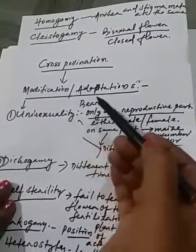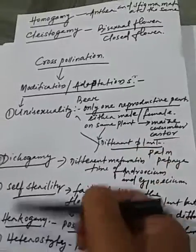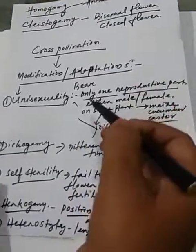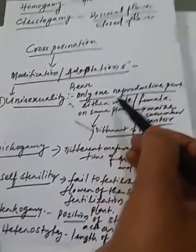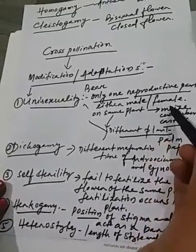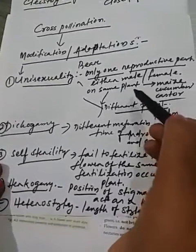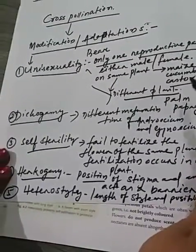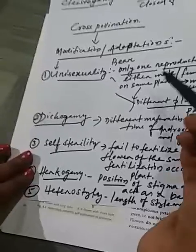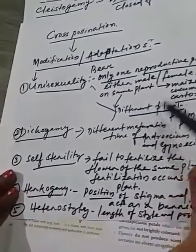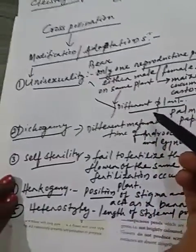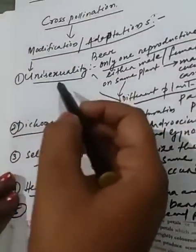Flowers are modified or adapted in 5 ways. The first one is unisexuality, which means plants bear only one reproductive part, either male or female, on the same plant. Examples are maize, cucumber, castor, etc. Or the reproductive part, either male or female, may be on different plants. This is called unisexuality.